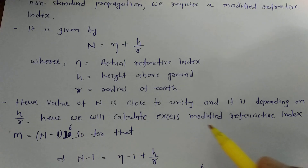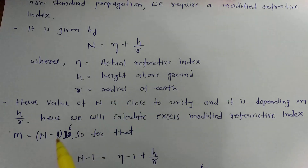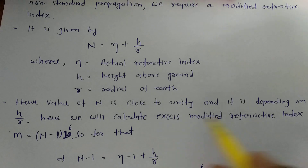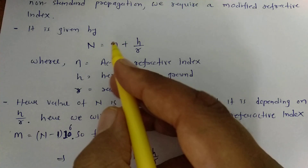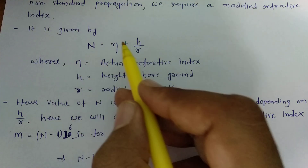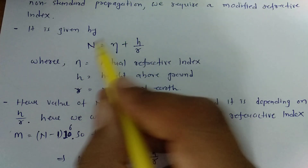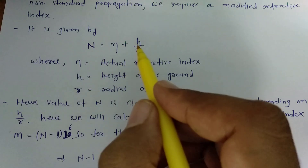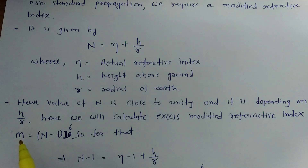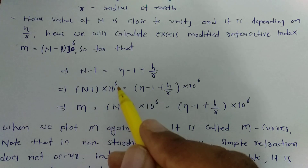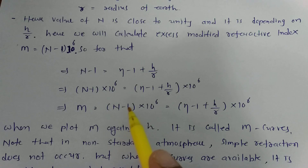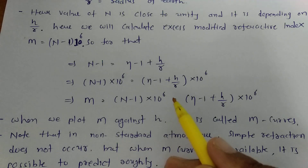We will calculate the modified refractive index M, which is defined as (N minus 1) times 10 to the power 6. To derive this, we subtract 1 from both sides of the equation for N and then multiply both sides by 10 to the power 6. So M equals (N minus 1) times 10 to the power 6.